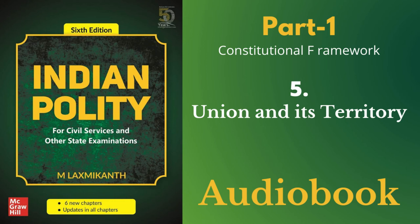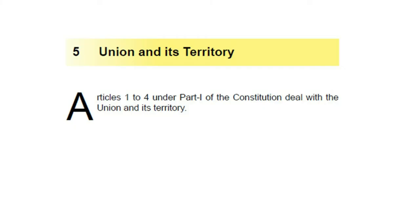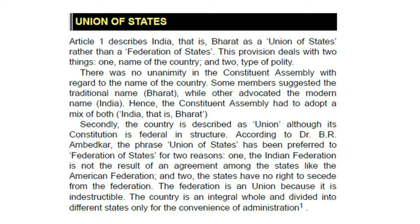Lakshmikanth Indian Polity Part 1, Chapter 5: Union and its Territory. Articles 1 to 4 under Part 1 of the Constitution deal with the Union and its Territory. Article 1 describes India, i.e., Bharat, as a Union of States rather than a Federation of States. This provision deals with two things: the name of the country and the type of polity.